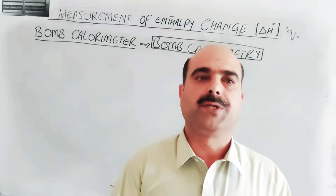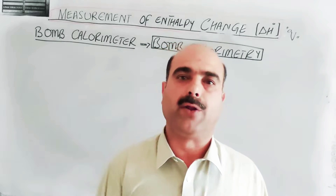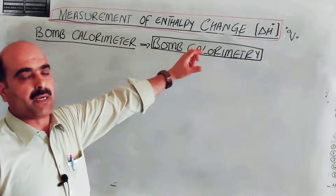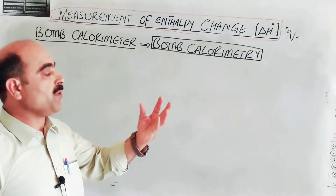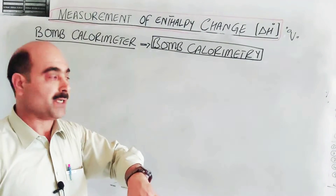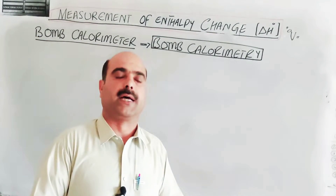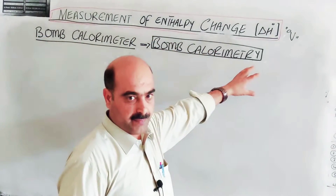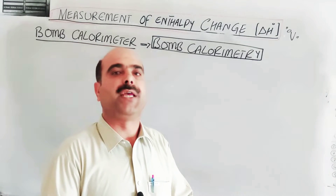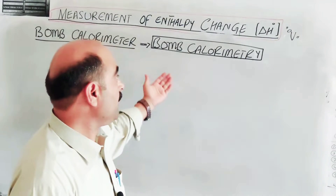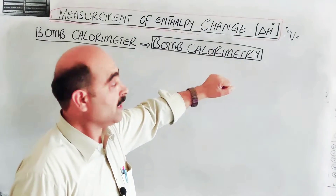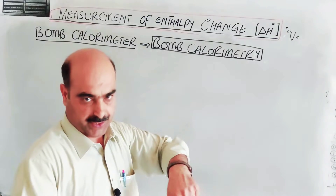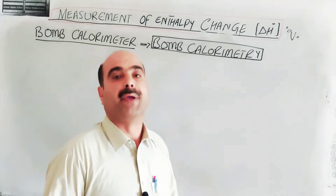The topic is measurement of enthalpy change, or measurement of heat change, by using bomb calorimeter. In the previous video, we discussed measurement of enthalpy change and which instruments are used — the calorimeter. We discussed two calorimeters: the glass calorimeter and the bomb calorimeter. Now our topic is bomb calorimetry. The process during which enthalpy change or heat change of a reaction is measured by using bomb calorimeter is known as bomb calorimetry.